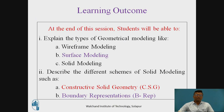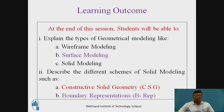Now what are the learning outcomes? The students will be able to explain the different types of geometrical modeling like the wireframe, surface and the solid modeling. Also they can describe the different schemes of solid modeling like Constructive Solid Geometry (CSG) and Boundary Representation, i.e. B-rep.